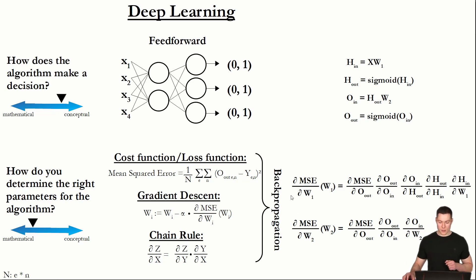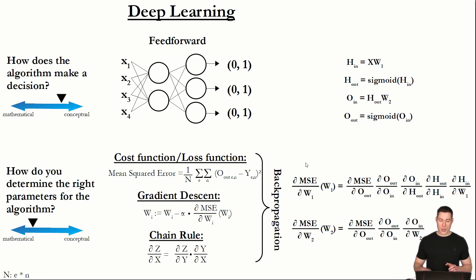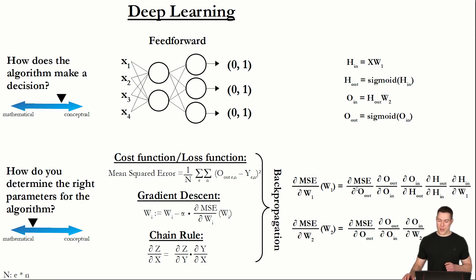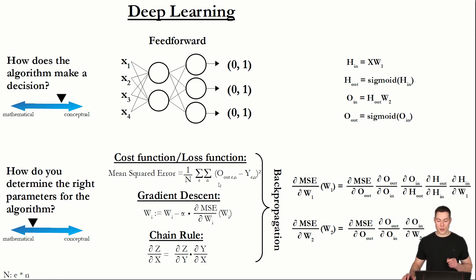The problem is that here we are dealing with capital letters, which means we are dealing with matrices. We have to determine the partial derivative with respect to a matrix, not just a regular scalar variable as we did in the previous videos. Because of that, we have to make use of something called matrix calculus. Since that's something not normally learned in school and is quite complicated, we are going to take a step back and represent those equations using scalar variables — variables that represent a single number.